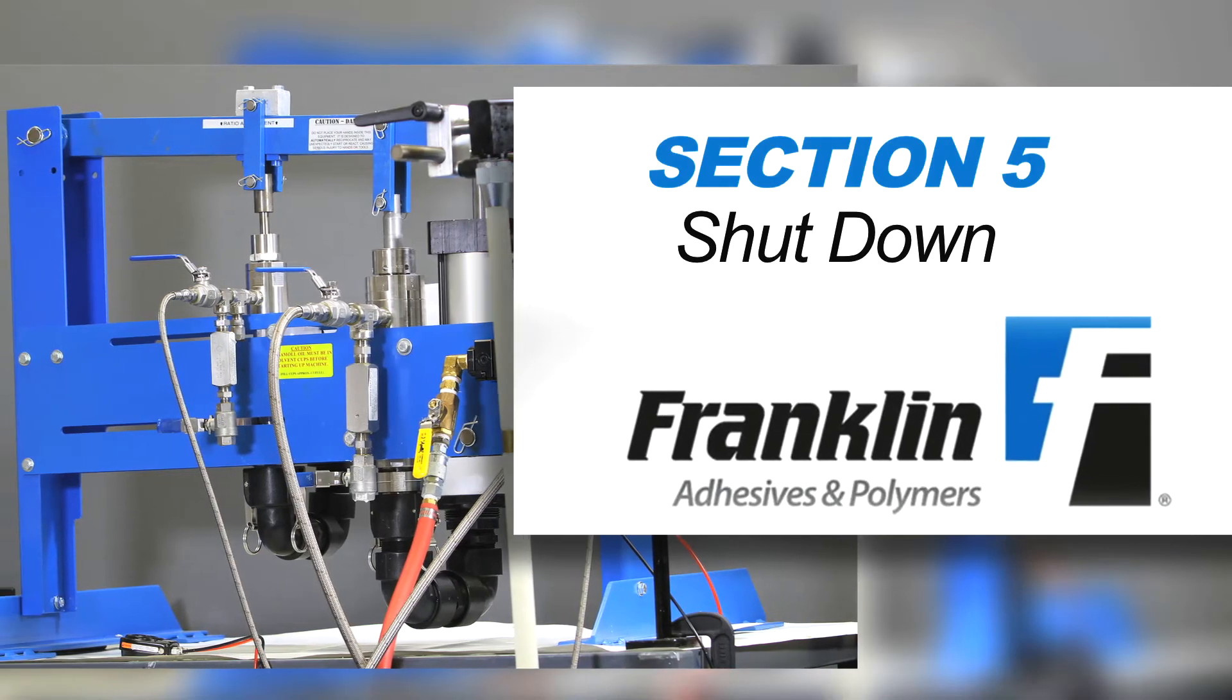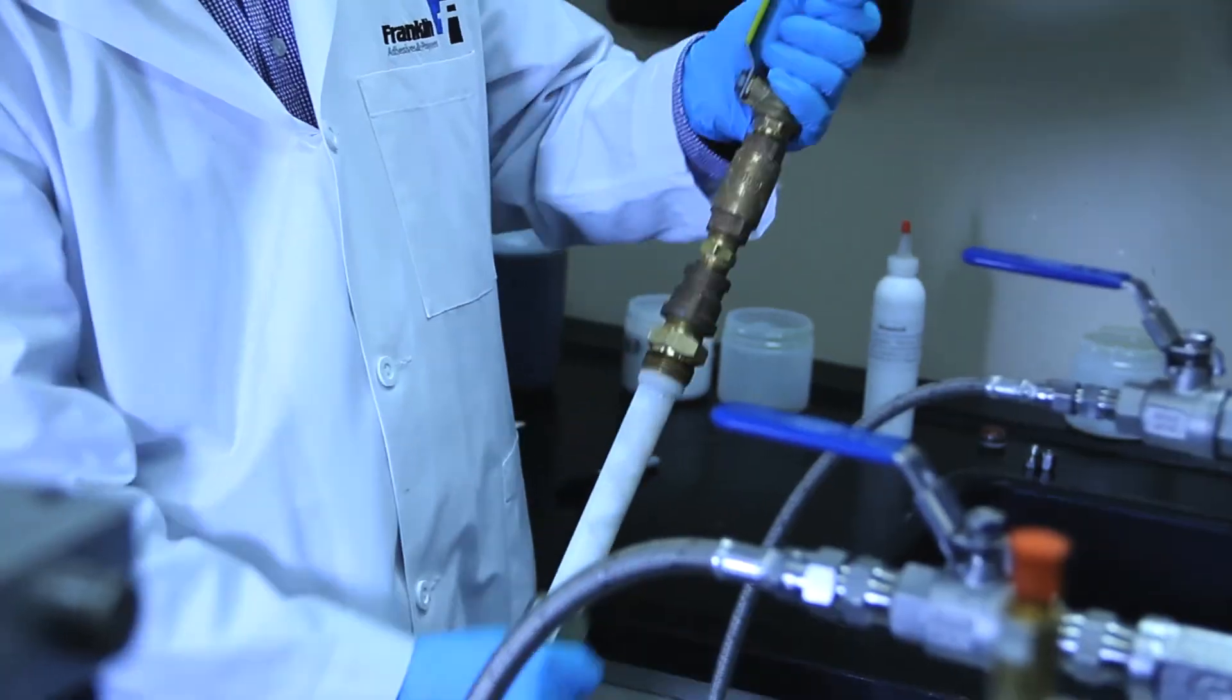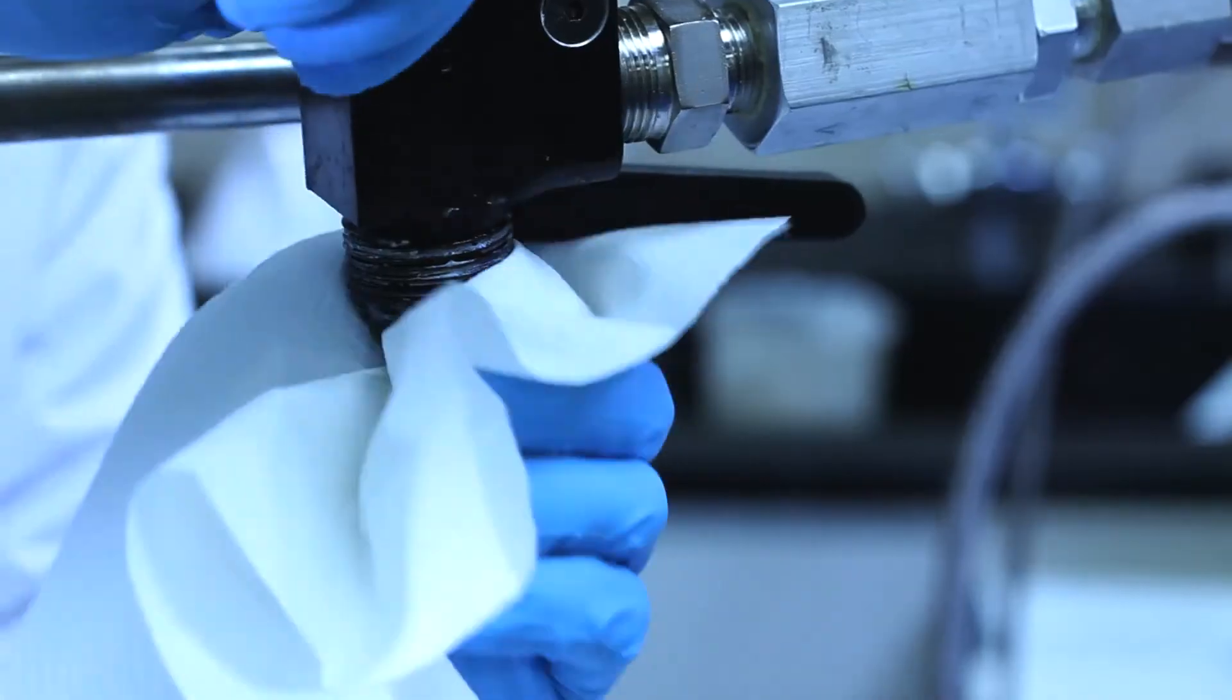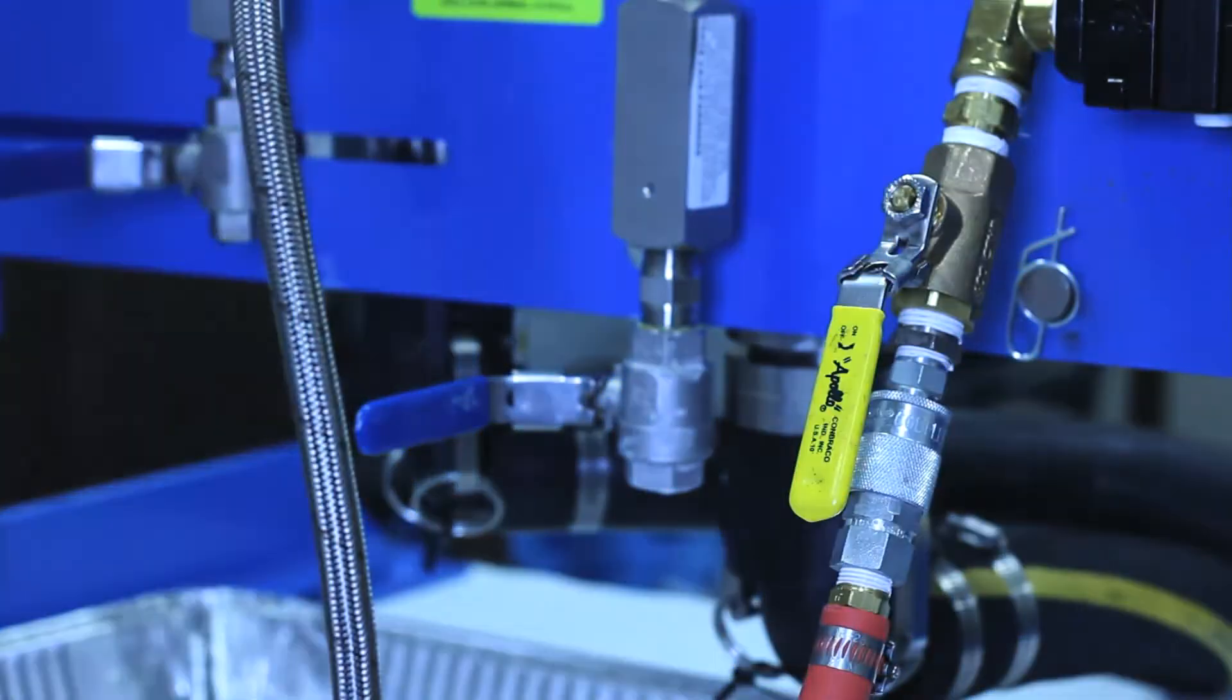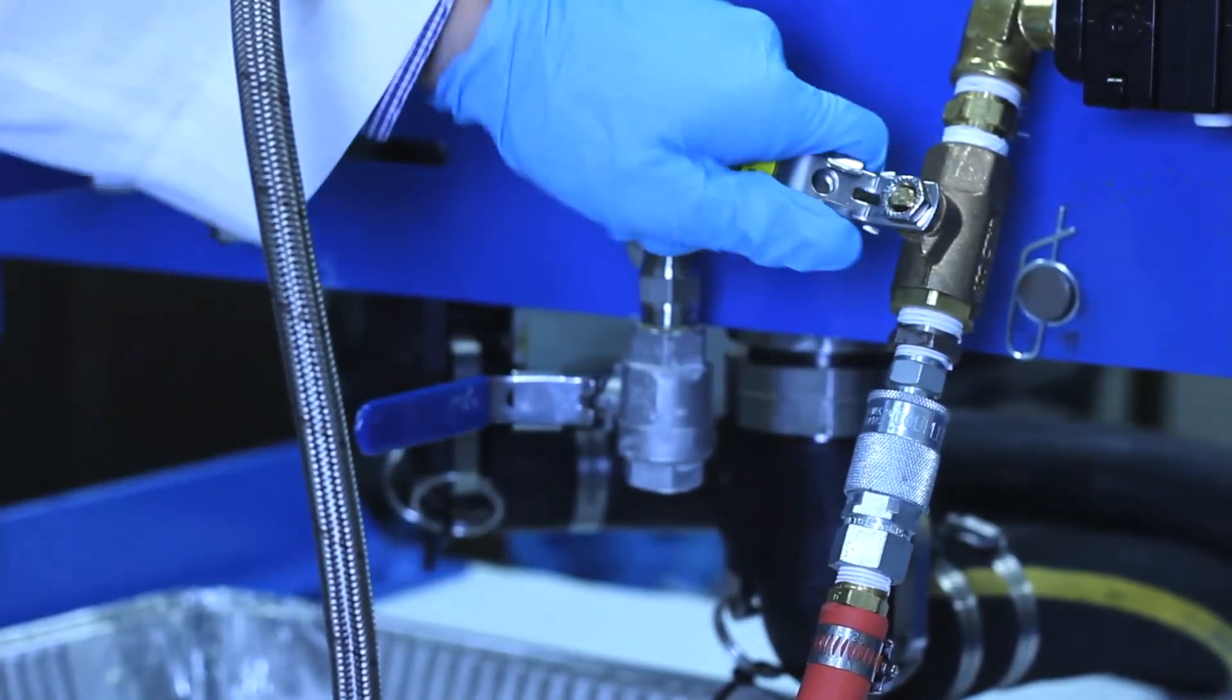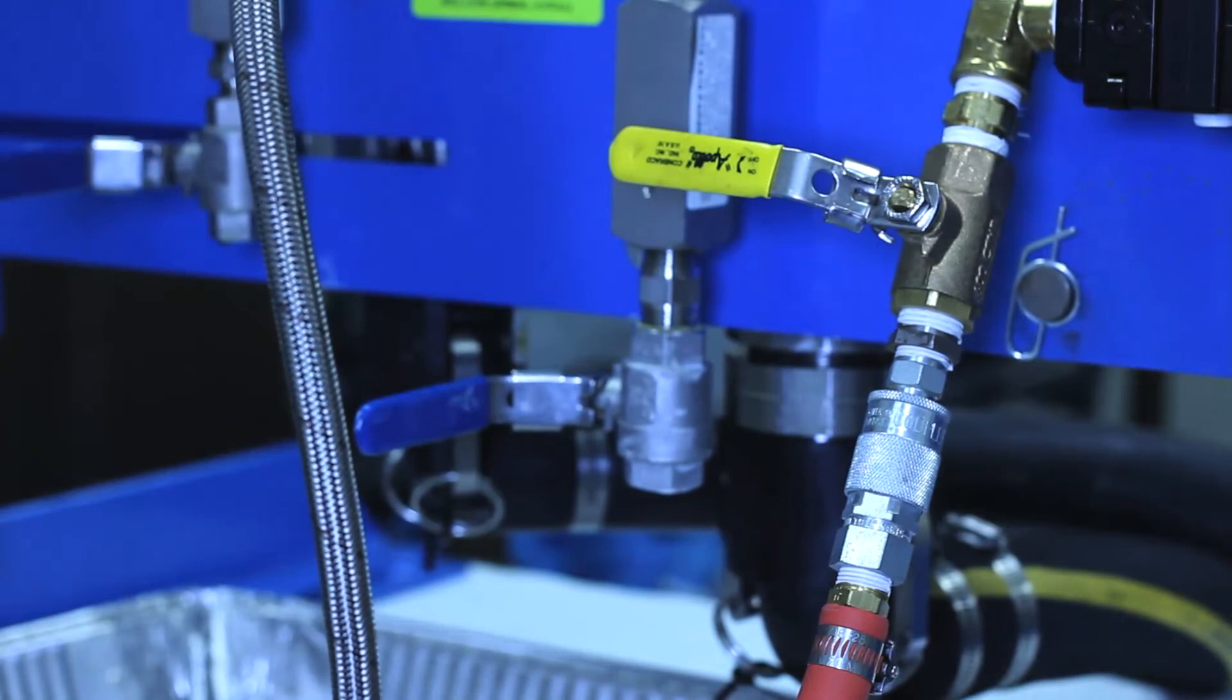Section 5. Shutdown. We will demonstrate an extended shutdown sequence, but we will indicate quicker stopping points for use as necessary. For a quick stop, 30 minutes or less, the first step is to turn off air supply to mixer. The air supply is turned off to prevent anyone from turning on the mixer while unattended.